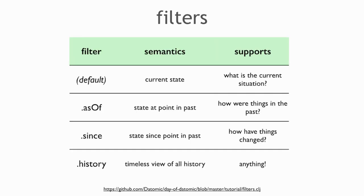Filters are applied to database values, and those database values can then be passed to query or to the raw indexes. Filters are predicates that remove things. When you're talking to the database it has everything, but the default filter — current state — filters out everything that's been retracted. As-of filters out new stuff. Since filters out old stuff. History filters out nothing.